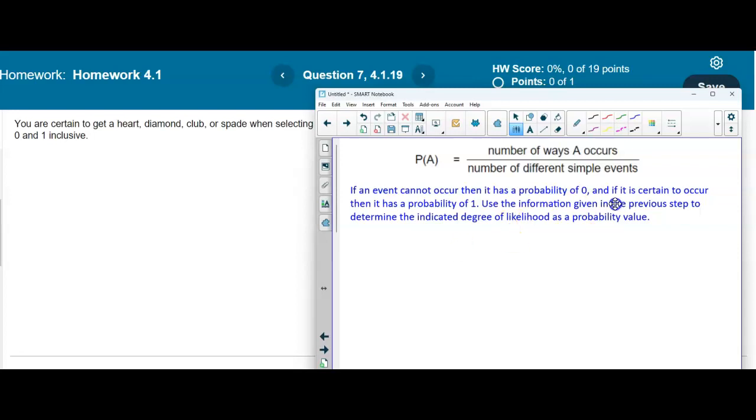Since it says that you are certain to get a heart, diamond, club, or spade, then we would say that the value of the probability of getting a heart, diamond, club, or spade is equal to 1.